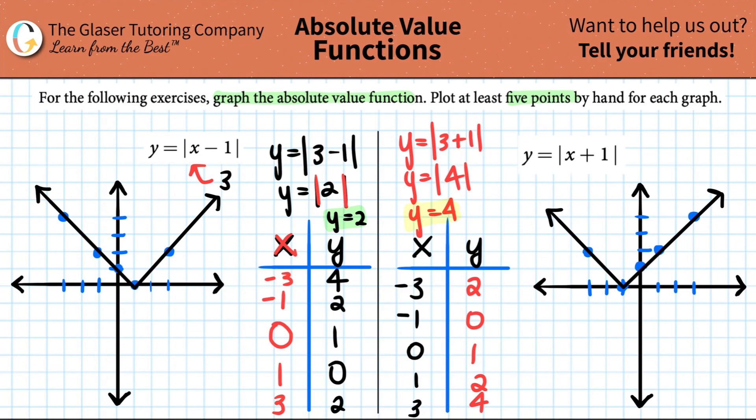You just put your little arrows signifying that this graph will just keep going on and on off the page. And that's it — graph the absolute value functions. Look how beautiful they are. They're basically the same graph, just shifted differently.